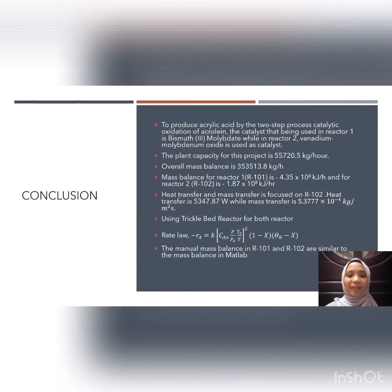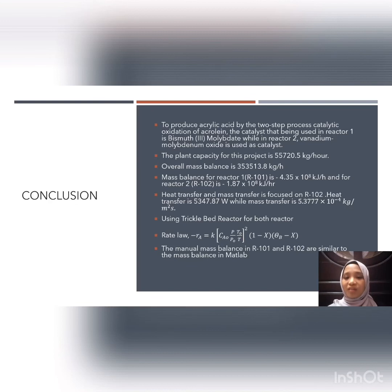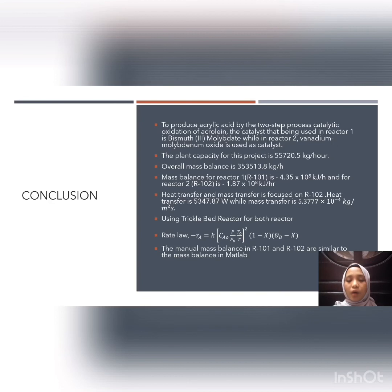In conclusion, our plant produces acrylic acid using a two-step catalytic oxidation process of propylene. The catalyst used in Reactor 1 is bismuth molybdate, while Reactor 2 uses vanadium molybdenum oxide. The plant capacity is 55,720.5 kg/hour and the overall mass balance is 353,513.8 kg/hour. The energy balance for Reactor 1 is negative 4.35 × 10⁸ kJ/hour and for Reactor 2 is negative 1.87 × 10⁸ kJ/hour — both negative values confirm they are exothermic reactions, releasing heat to the surroundings.